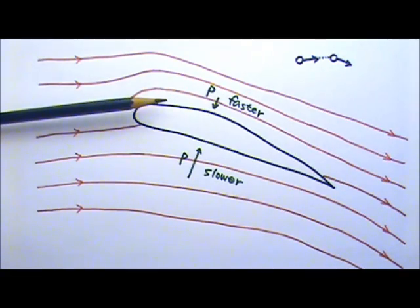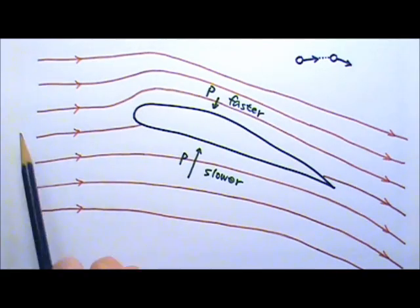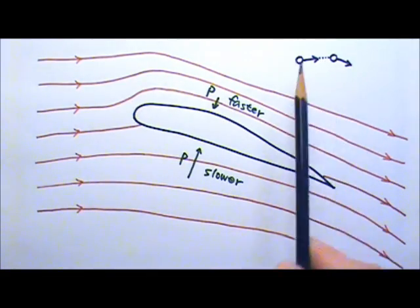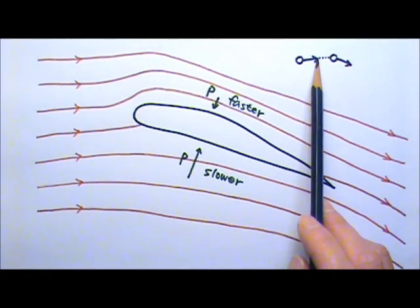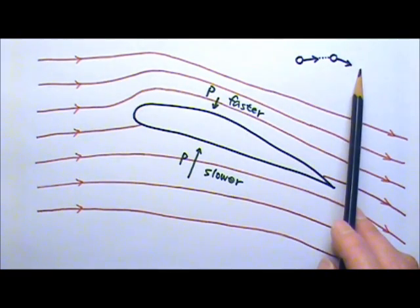The airflow used to be going this way and it gets bent that way. If we compare this bending of the airflow to the bending of a ball, let's say the ball comes in that direction first and then it gets hit, so it changes its direction of travel to this direction.